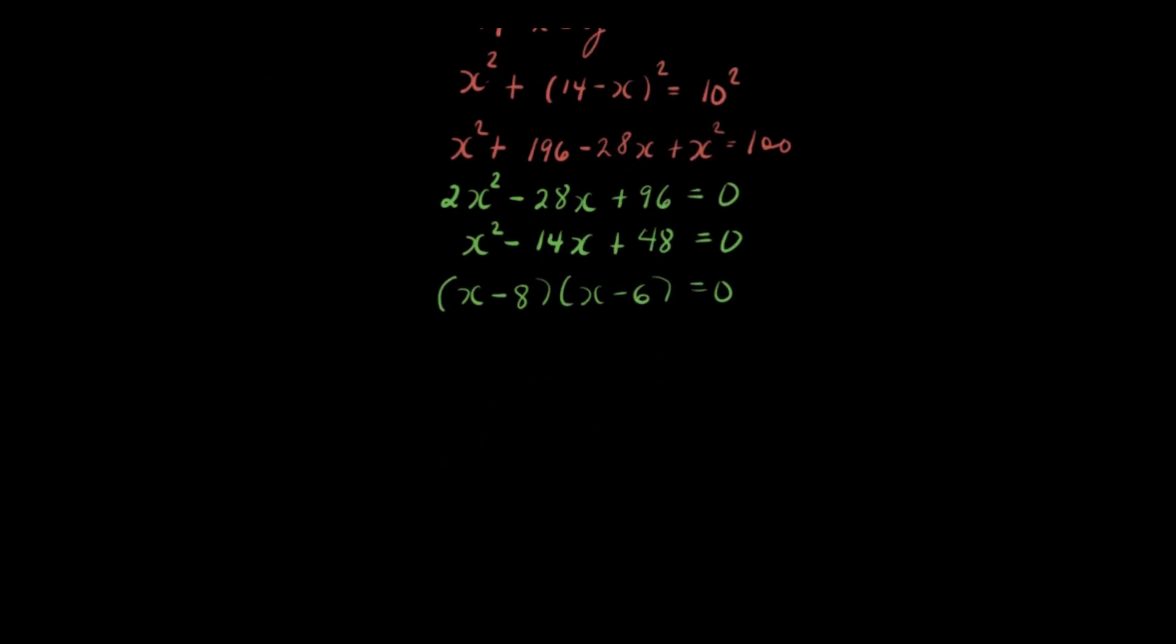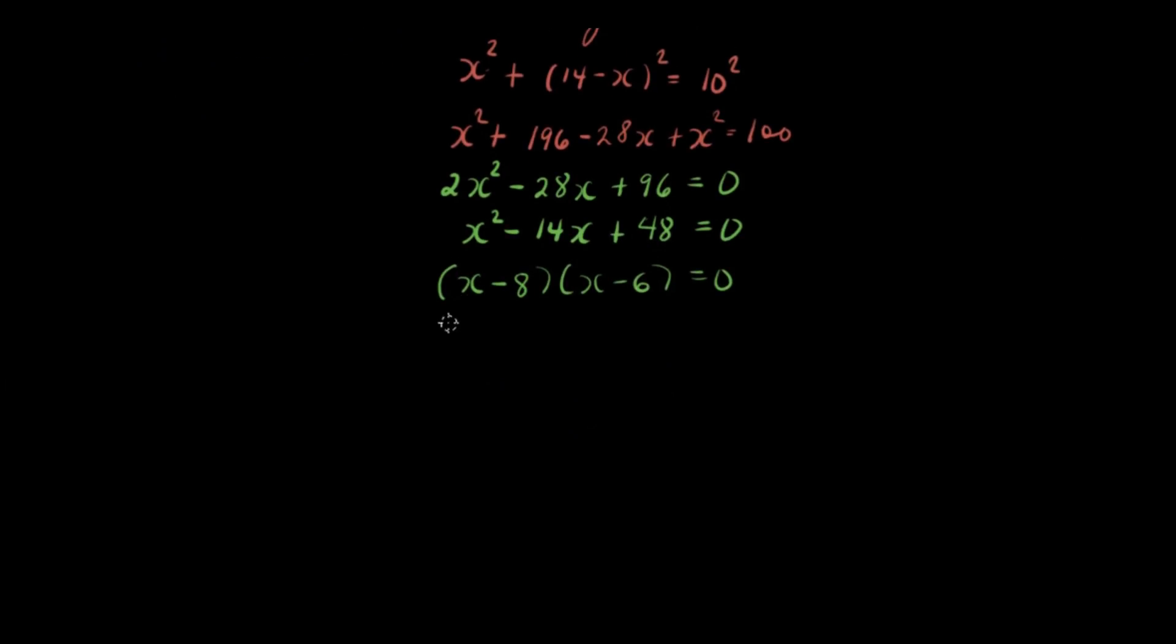And then we can apply the zero product property. So we have x minus 8 is equal to 0 or x minus 6 is equal to 0. So that means x is equal to 8 or x is equal to 6.